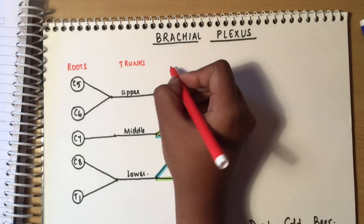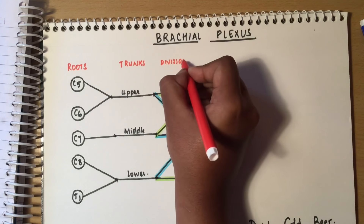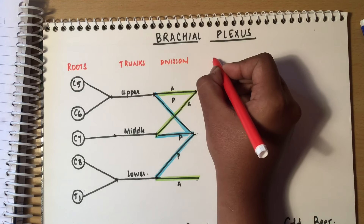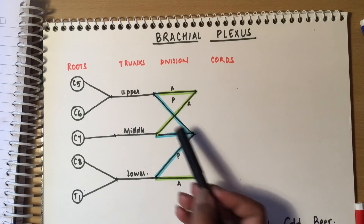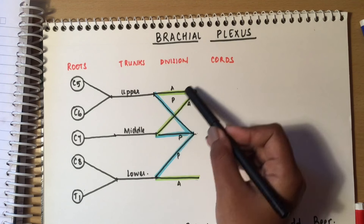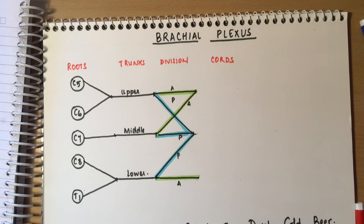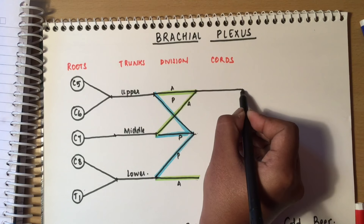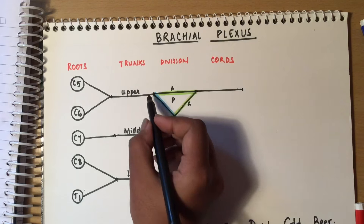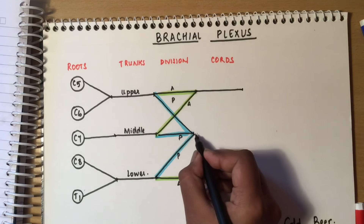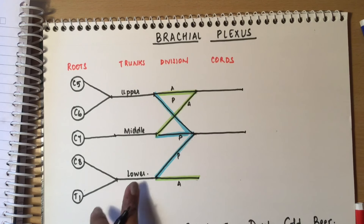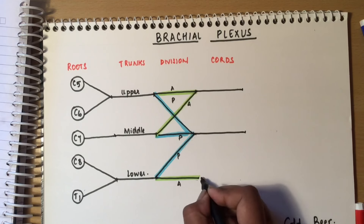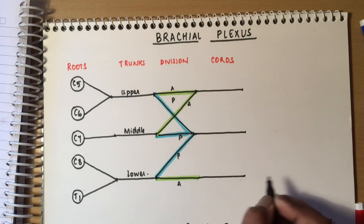After the divisions come the cords. The anterior division of the upper trunk and the anterior division of the middle trunk combine to form the lateral cord. All the posterior divisions from all three trunks combine to form the posterior cord. The anterior division of the lower trunk continues as the medial cord.